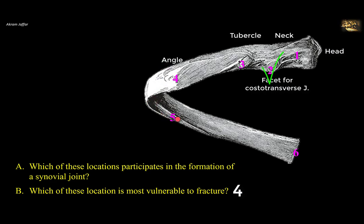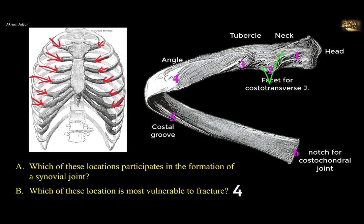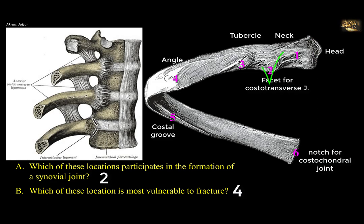Label five is the costal groove, parallel with the inferior border of the rib, providing protection for the intercostal neurovascular bundle. Label six is the anterior end where the rib articulates with the costal cartilage at a costochondral joint — a synchondrosis, a type of cartilaginous joint, not a synovial joint. So the synovial joint is formed at two. Note that the wedge-shaped head of the rib also has two facets that form synovial joints with the bodies of thoracic vertebrae, called costovertebral joints.